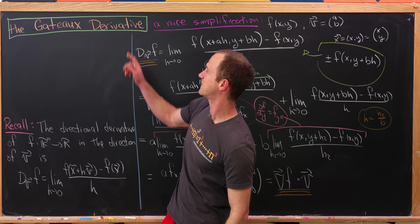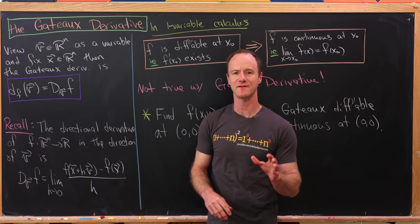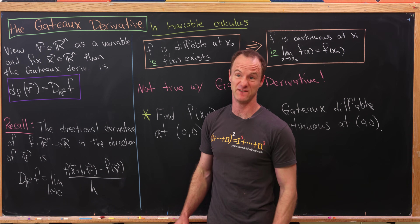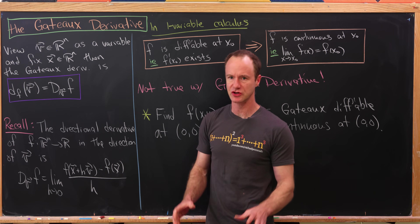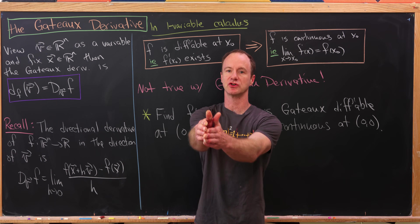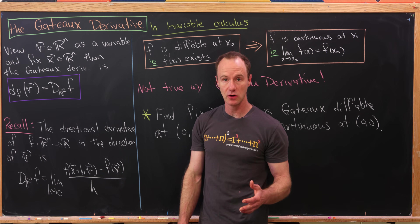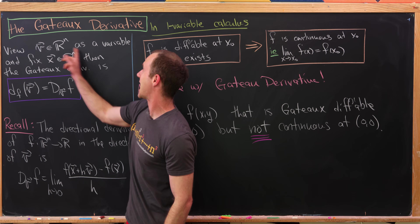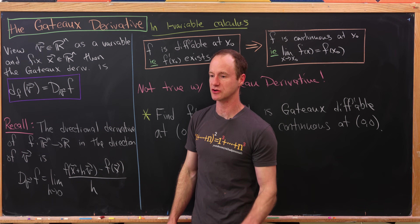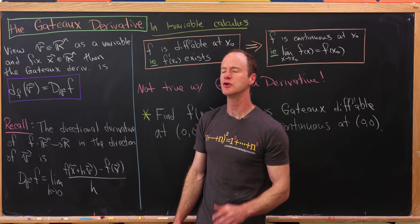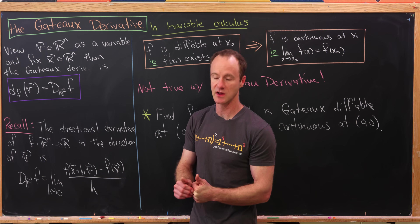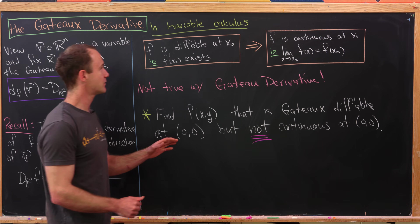Now that we've recalled what the directional derivative is, we can define the Gâteaux derivative. The Gâteaux derivative switches who plays the role of variable and who is fixed: with the directional derivative, x and y are variables and we fix the vector v; with the Gâteaux derivative, we view v as the variable and fix x. The Gâteaux derivative is simply the same formula as the directional derivative, just with this mental swap of roles.